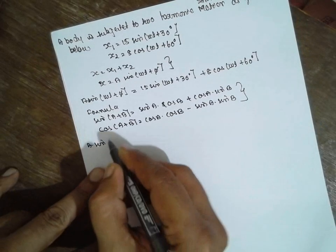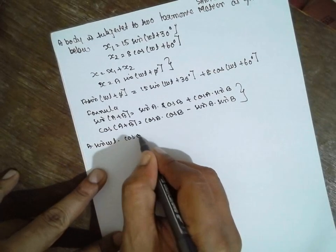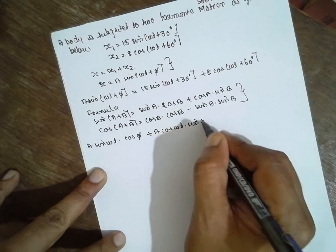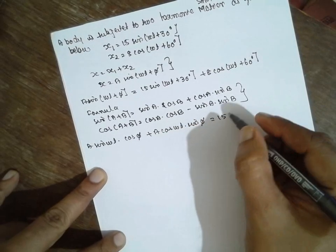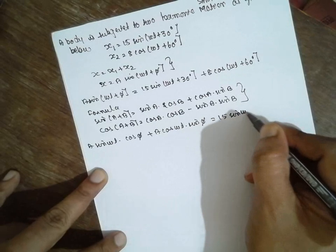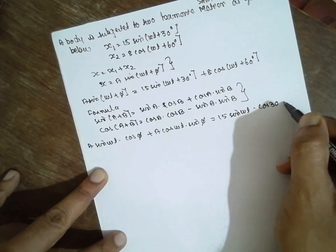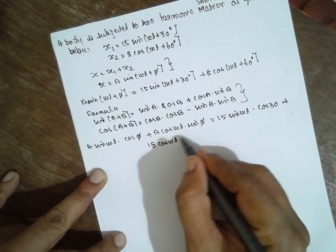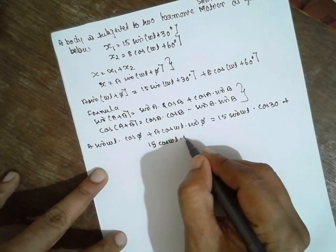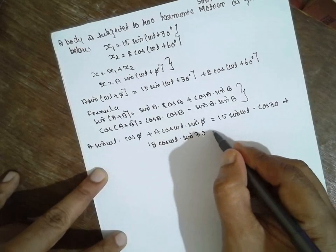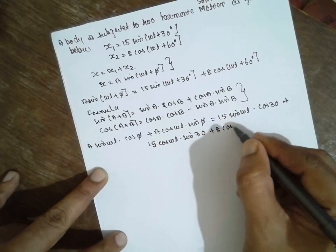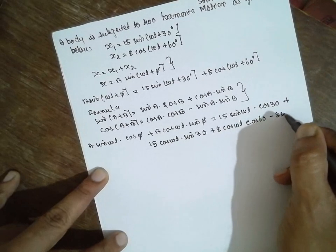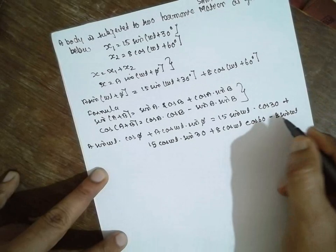Expanding: A sin(ωt) cos φ + A cos(ωt) sin φ equals 15 sin(ωt) cos 30° + 15 cos(ωt) sin 30° + 8 cos(ωt) cos 60° minus 8 sin(ωt) sin 60°.